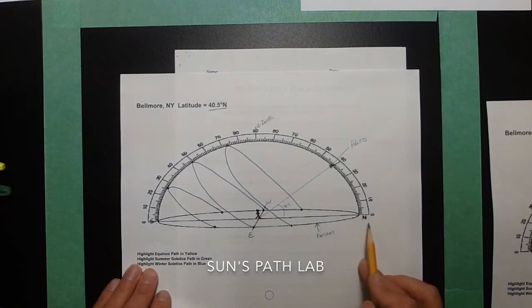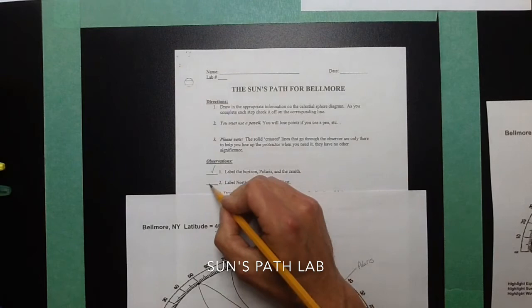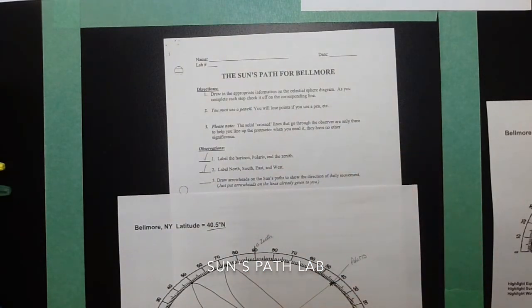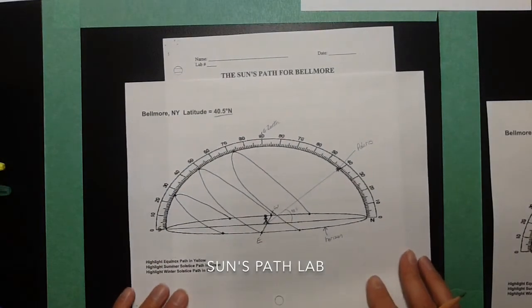But with north on the right, east is in the foreground. So we're going to check this off. Draw the arrowheads on the sun's path to show the direction of daily movement. Put the arrowheads on the lines already given to you. So you've got three path of the sun diagrams.